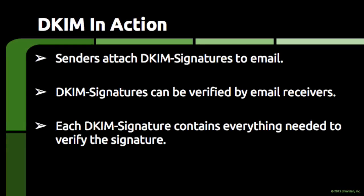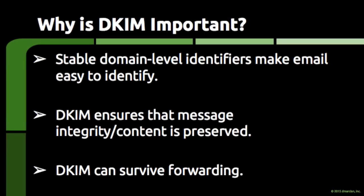To use DKIM, email servers are configured to attach special DKIM signatures to the emails they send. These signatures travel with the emails and can be verified along the way by the email servers moving the emails toward their final destination. Each signature contains all information needed for an email server to verify that the signature is real and that the content of the email hasn't been modified. DKIM allows people to attach a watermark of sorts to email so that receivers can verify the email actually came from a domain and hasn't been tampered with. DKIM signatures can survive forwarding and render a degree of confidence that an email really did come from where it says it comes from.